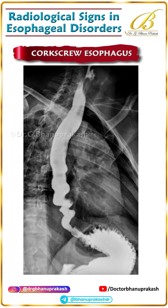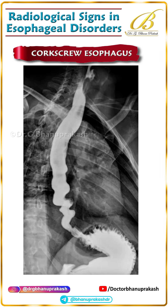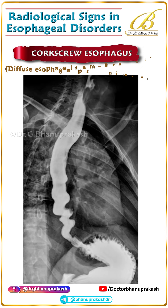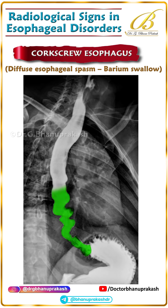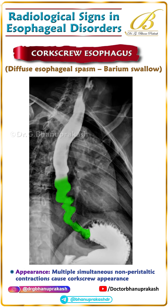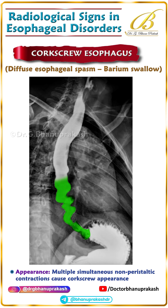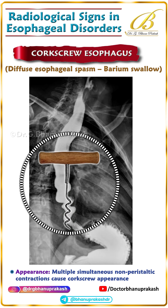Finally, the corkscrew esophagus. This appears in diffuse esophageal spasm. On barium swallow, you will notice multiple, irregular, simultaneous contractions, giving the esophagus a twisted corkscrew-like appearance.